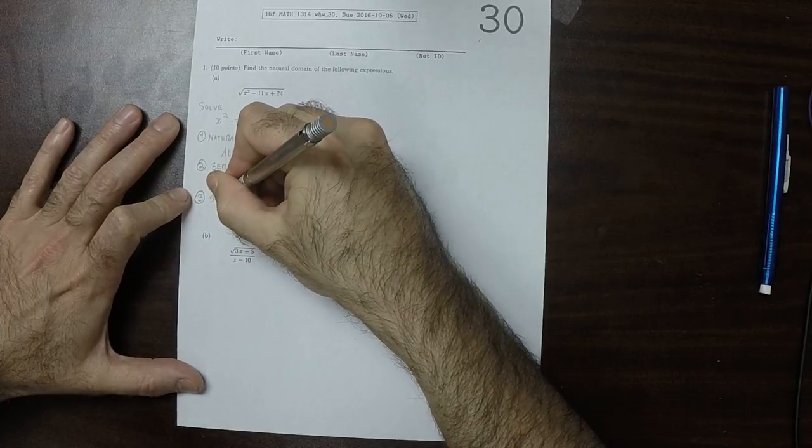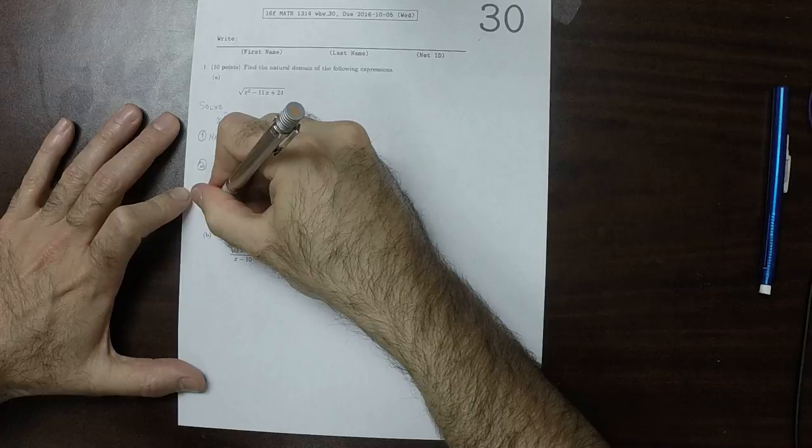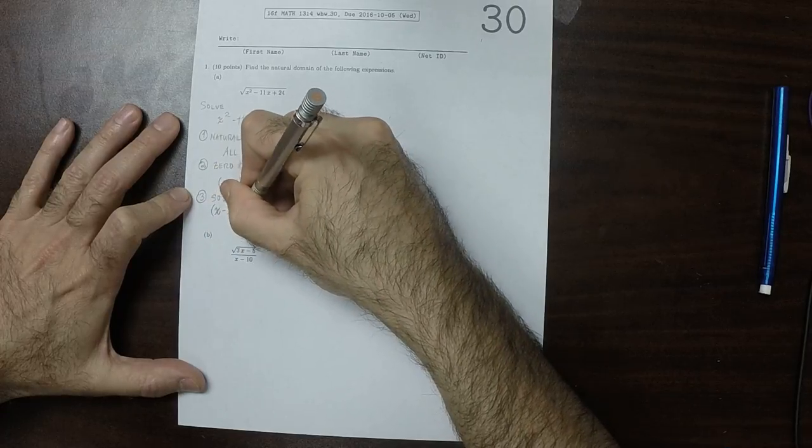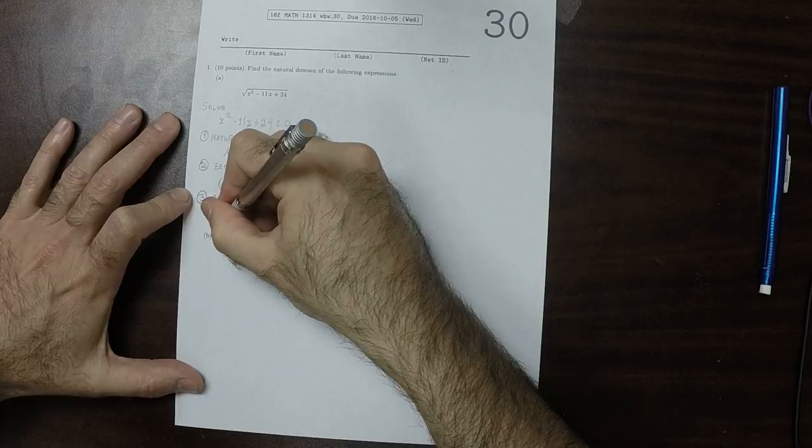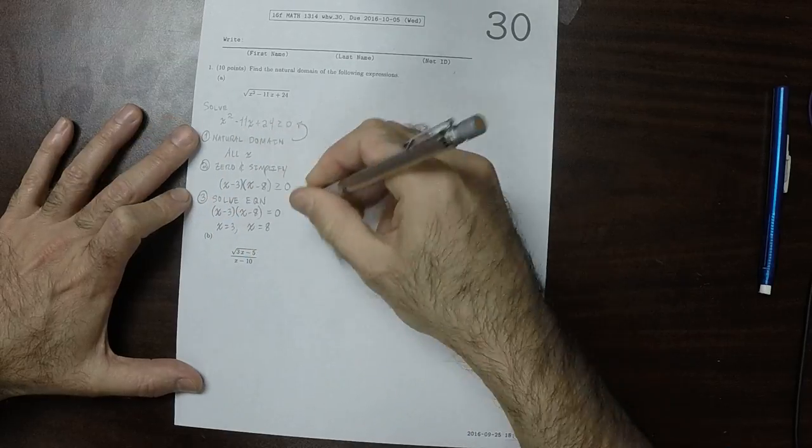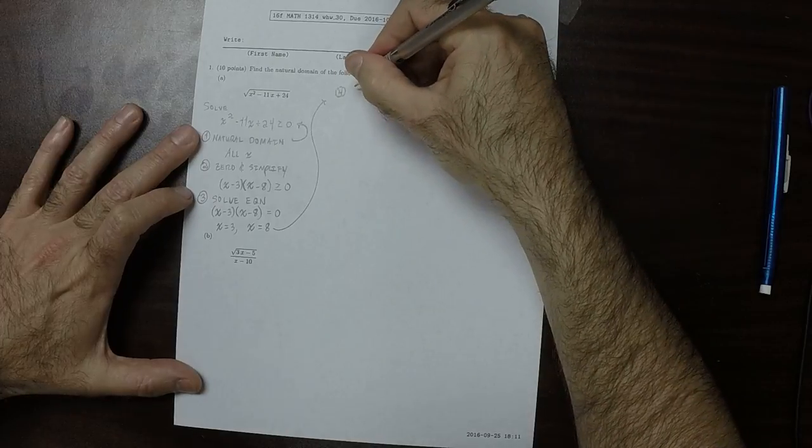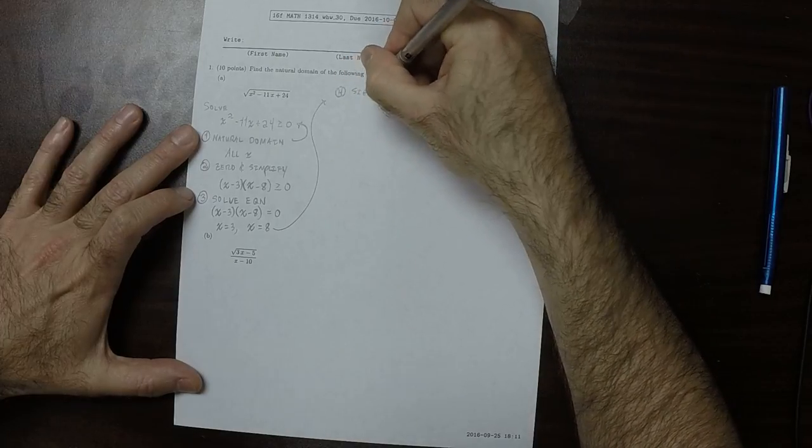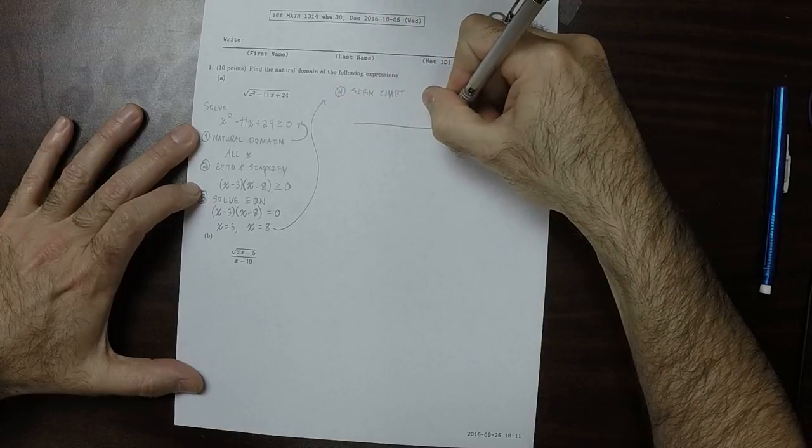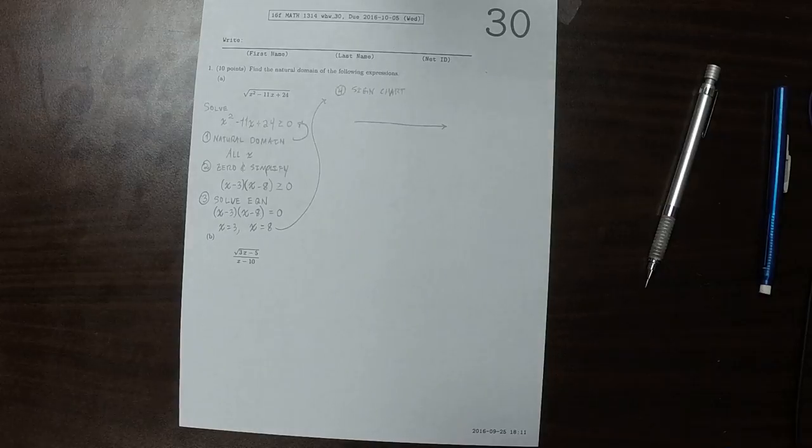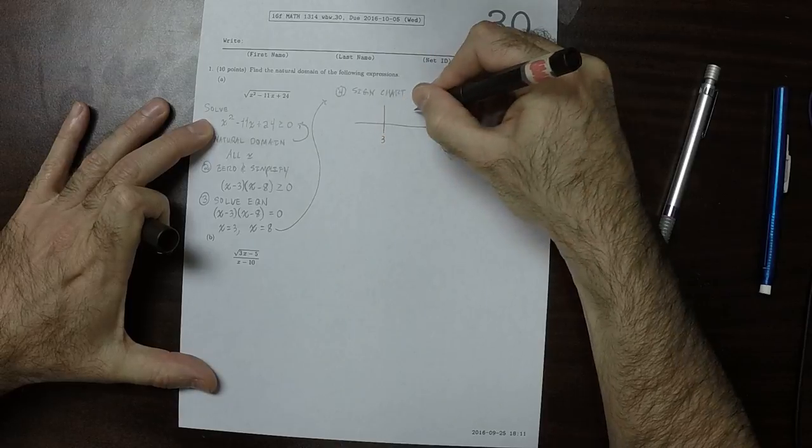The next step is that we want to solve the corresponding equation. So the equation we want to solve is x minus 3 multiplied by x minus 8 is equal to 0, and the solutions to this equation are obviously 3 and 8. The next step is to make the sign chart. We found no breaks in the natural domain, so there's nothing to plot there, and then we found two solutions. So we found one of them to be 3 and the other one to be 8.